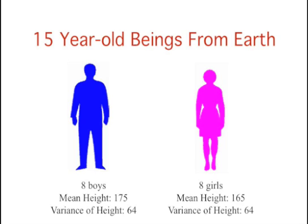This simplified version of the formula can be used for the following problem. The mean height of 15-year-old boys in centimeters is 175, and the variance is 64. For girls, the mean is 165, and the variance is 64. If 8 boys and 8 girls were sampled, what is the probability that the mean height of the sample of girls would be higher than the mean height of the sample of boys? In other words, what is the probability that the mean height of girls minus the mean height of boys is greater than 0?